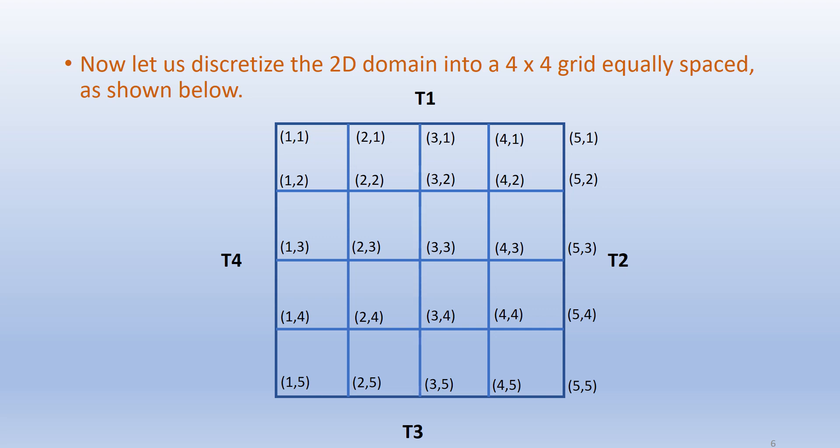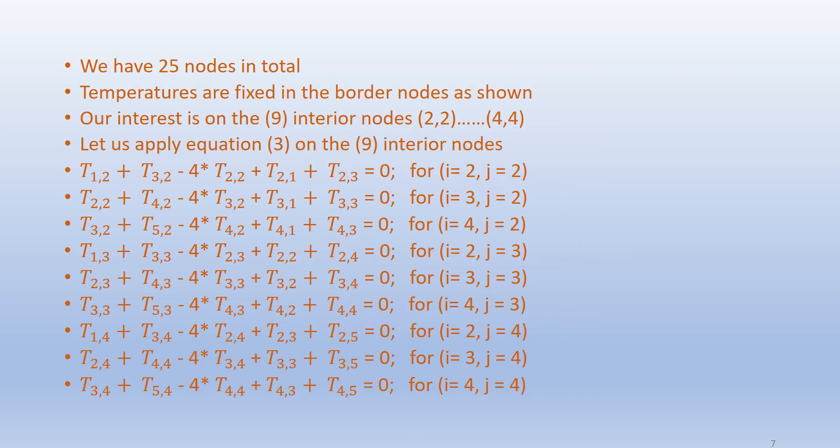Now let us discretize the 2D domain into a 4 by 4 grid, equally spaced as shown. We have 25 nodes in total. Temperatures are fixed at the border nodes as shown. Our interest is in the 9 interior nodes from (2,2) to (4,4). Applying equation 3 to the interior nodes gives, for example at i=2, j=2: T(1,2) + T(3,2) + T(2,1) + T(2,3) - 4T(2,2) = 0. Likewise for the other nodes, the equations are given here.